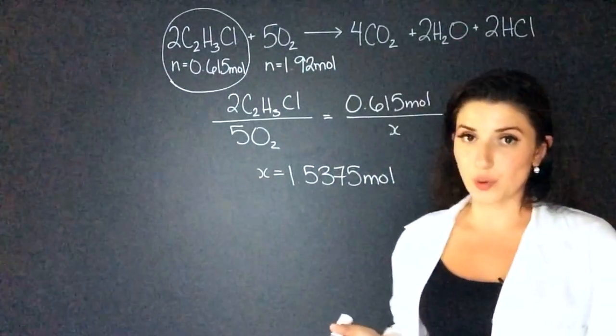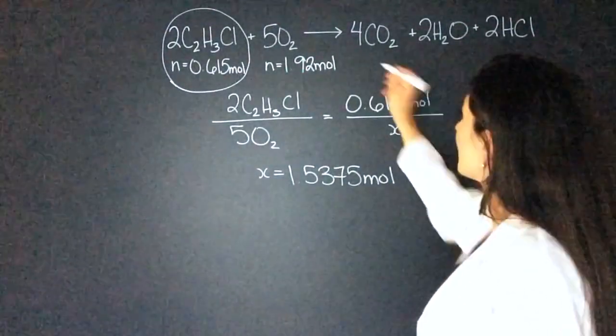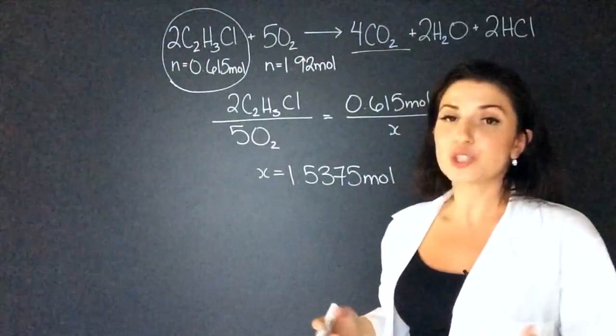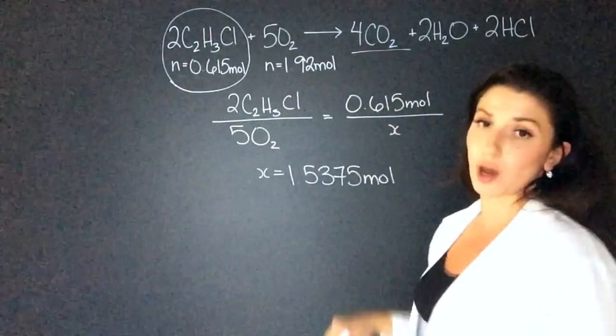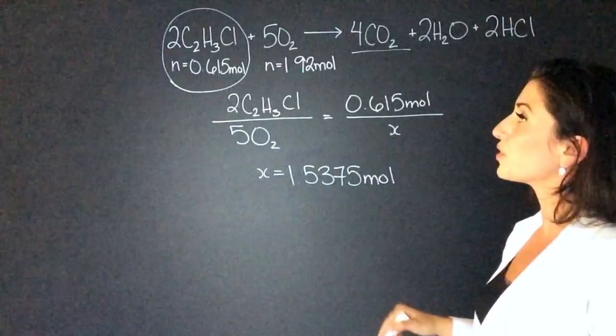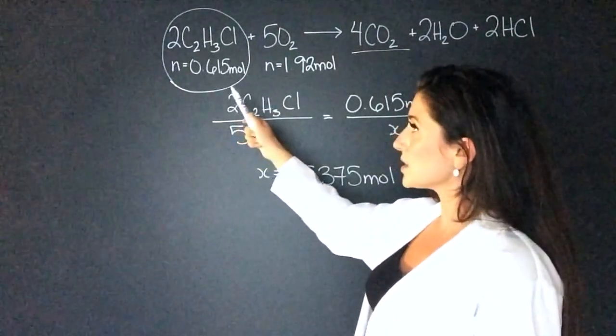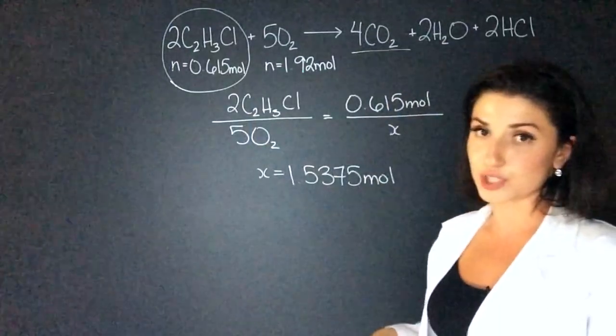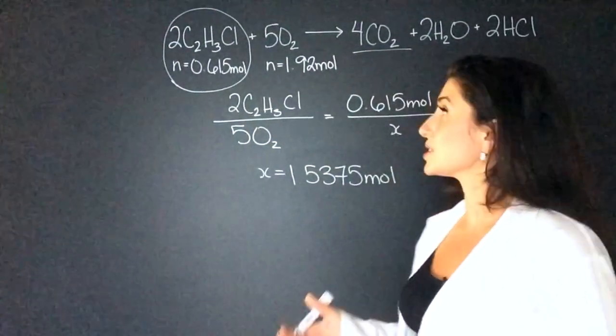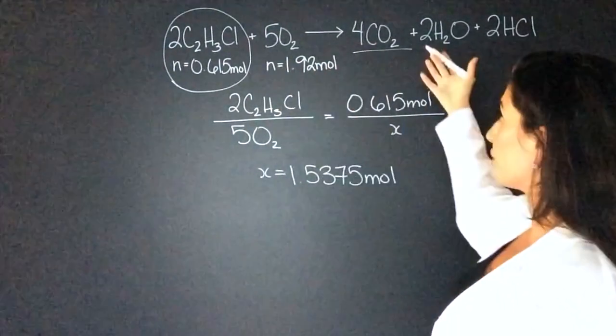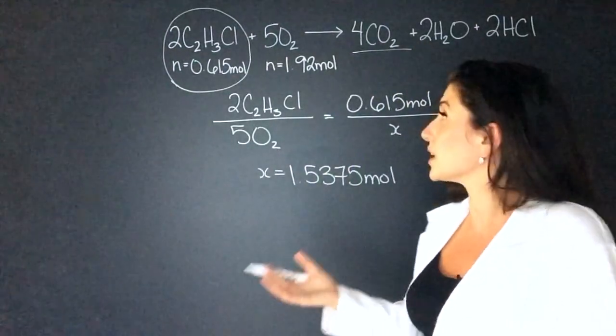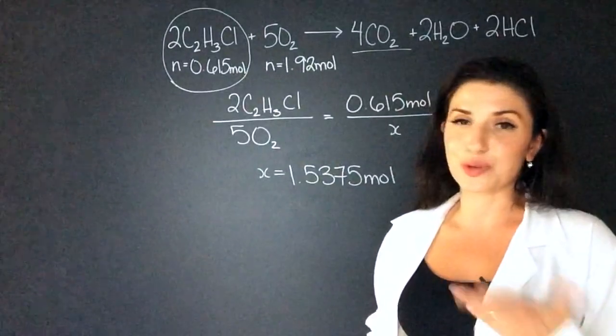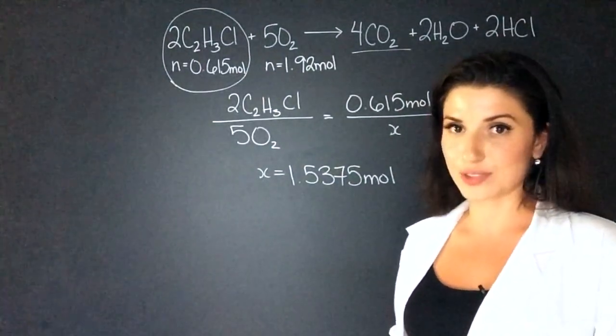Now for part two of the question, they ask us how much CO2 we're going to have, how many moles of CO2. So all we have to do is use the stoichiometry coefficients. So for every two moles of C2H3Cl, I'm going to get four CO2. You can do this two ways. If you know that two and four are a double of each other, you can just double this number or you can do a full cross multiply and divide. So I'll show you that.